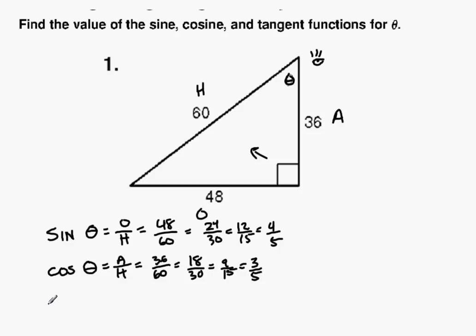And finally, I have tangent of theta, which is opposite over adjacent, which in this case is going to be 48 over 36, which would be 24 over 18, which is 12 over 9, which is 4 over 3.